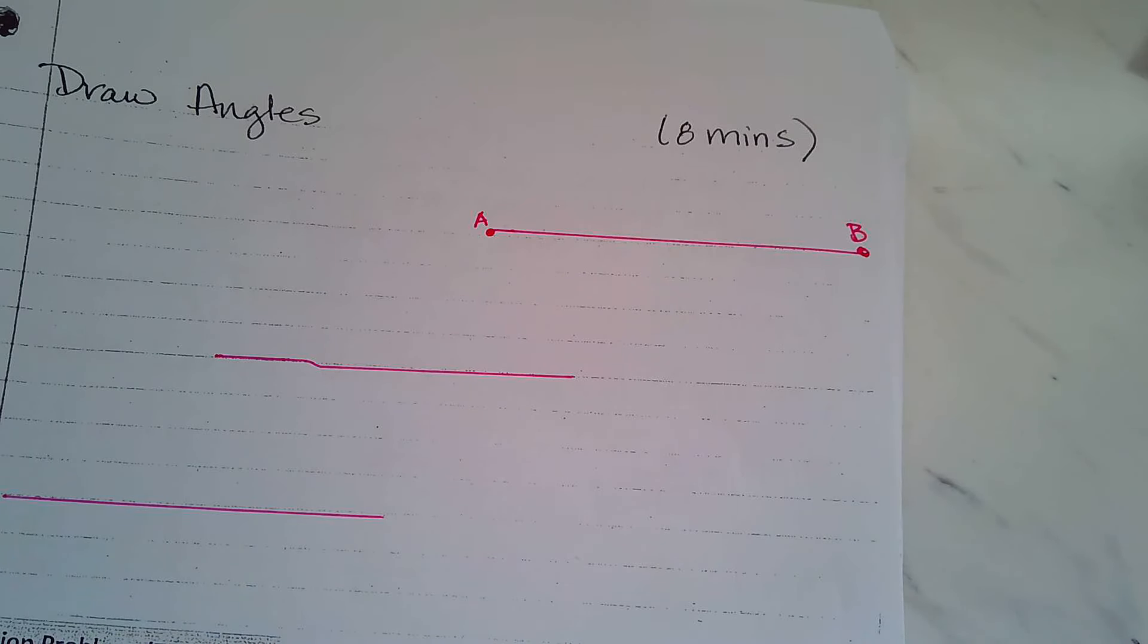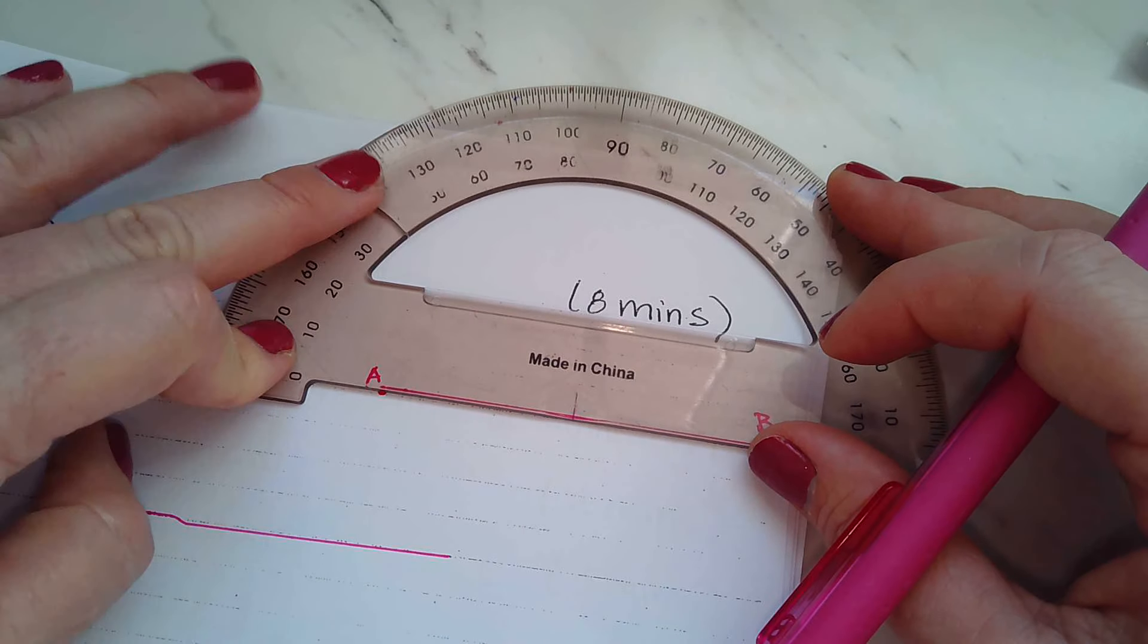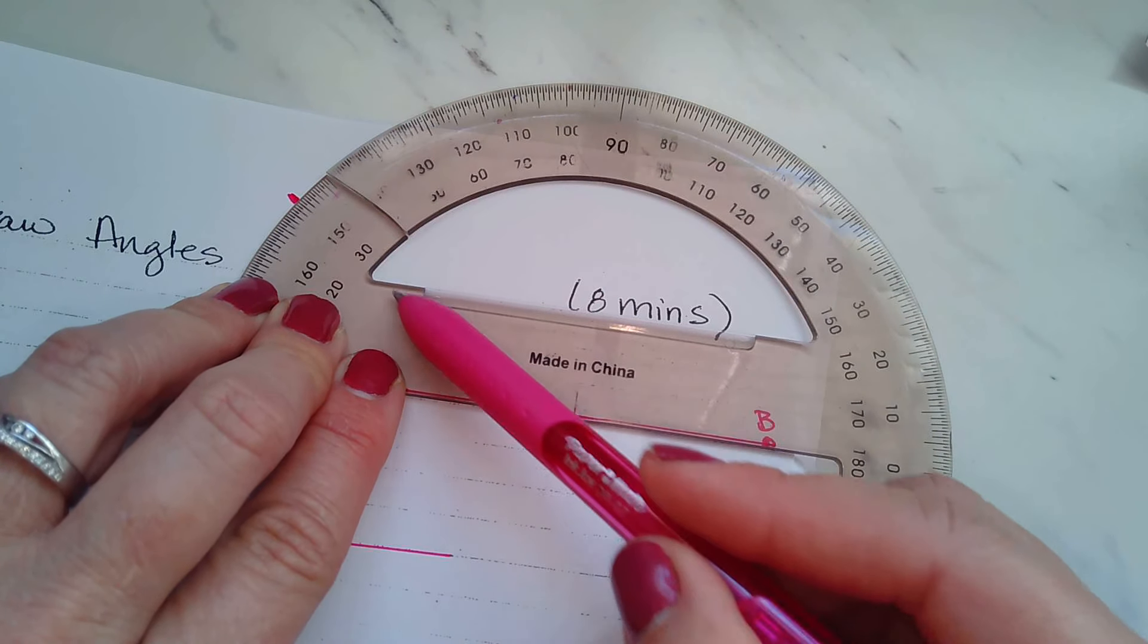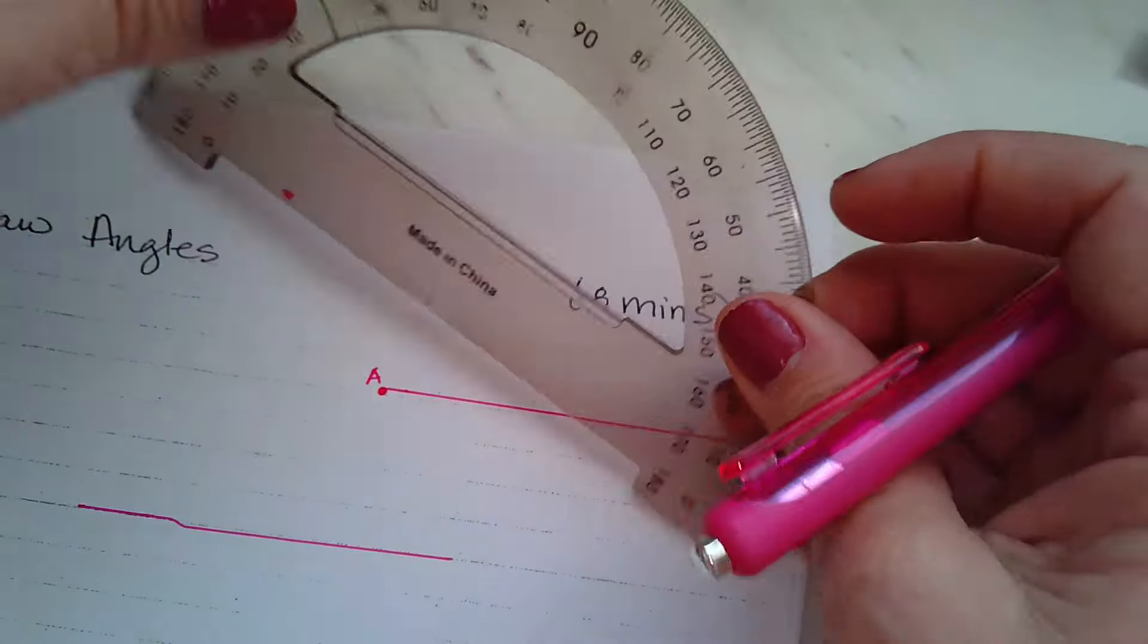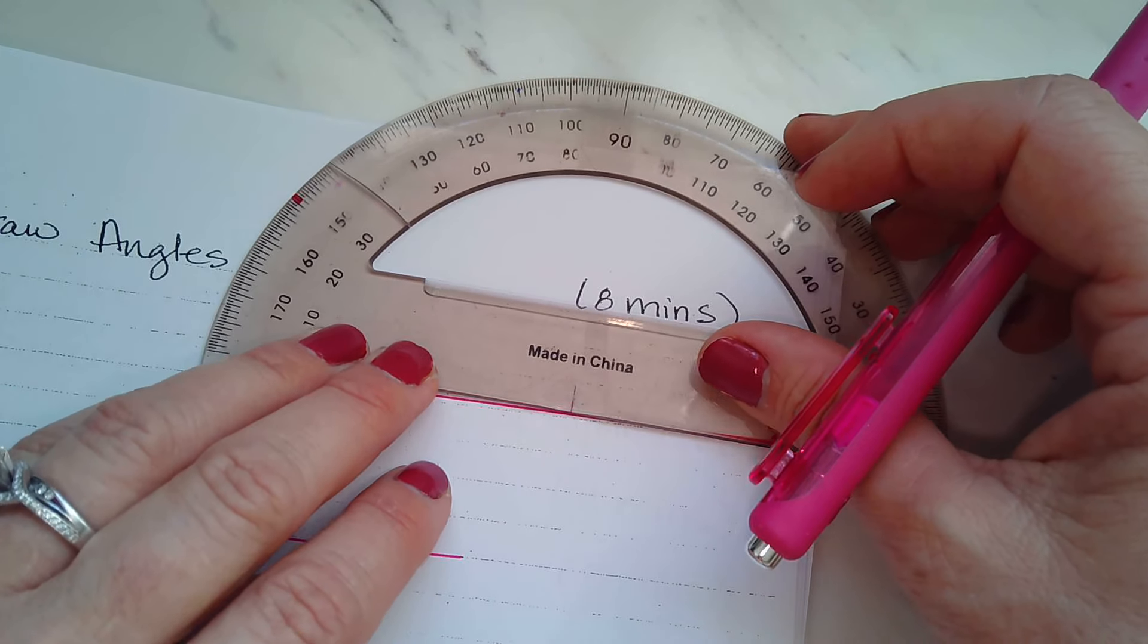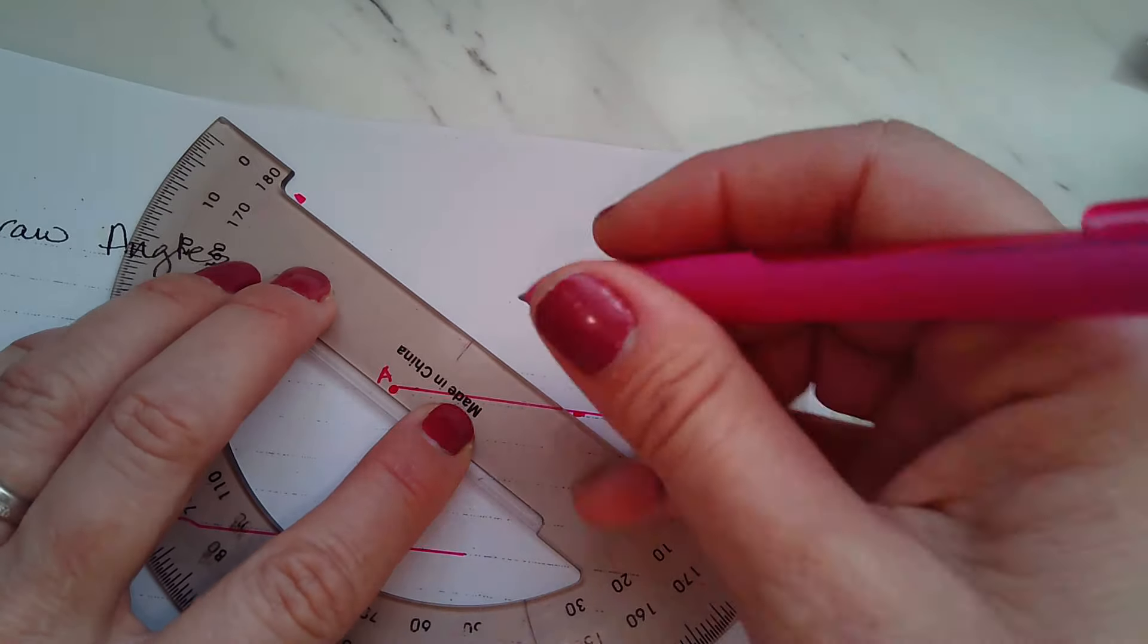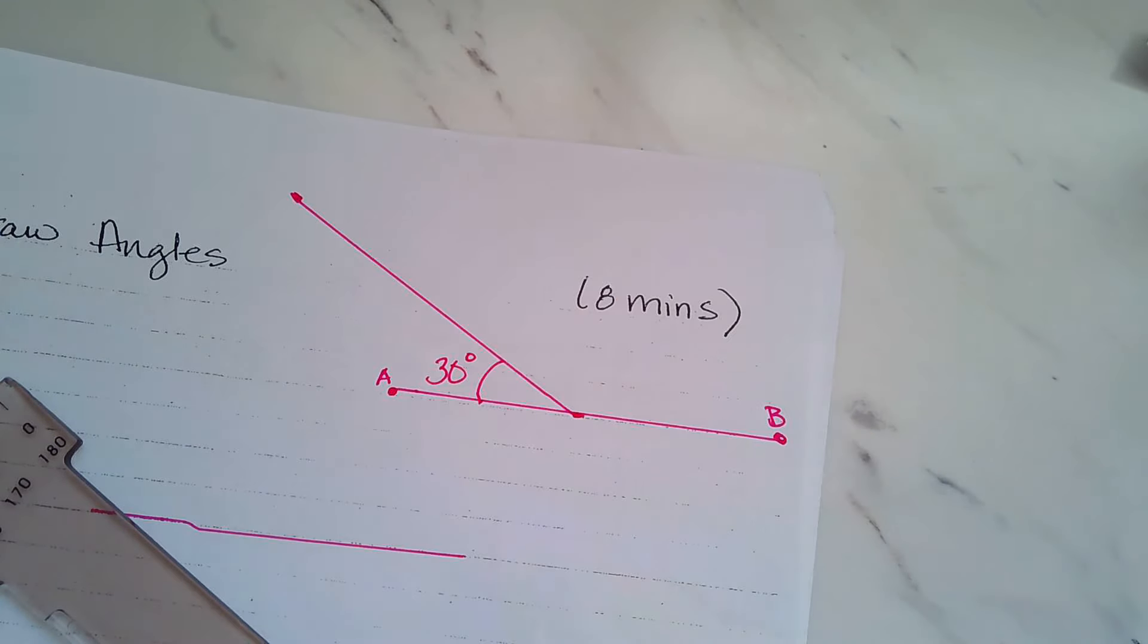Then what I want you to do, if you have your protractor, let's line this up, and let's draw a 30-degree angle going in this direction. So if you notice, I'm using the 30 on the bottom going to the left. Oh, you know what? I didn't mark my center. Let's mark my center, right? So I have a 30-degree angle right here.